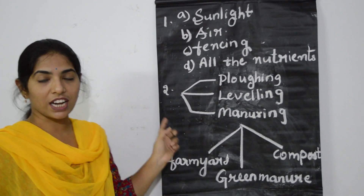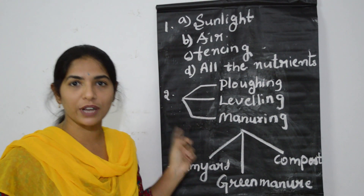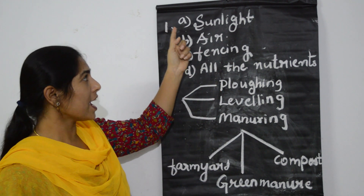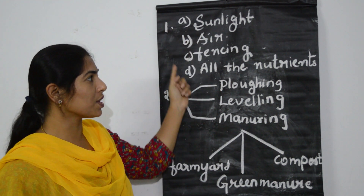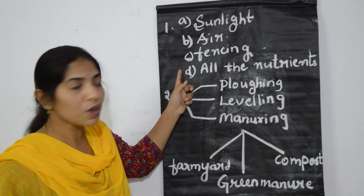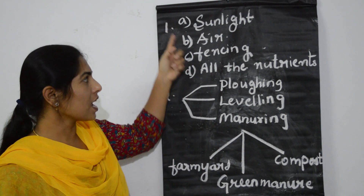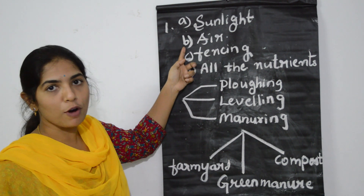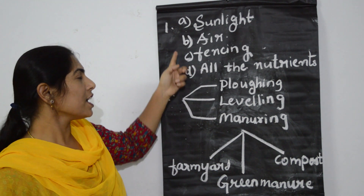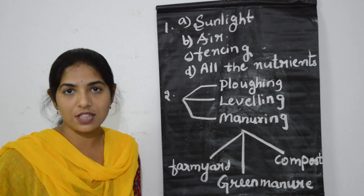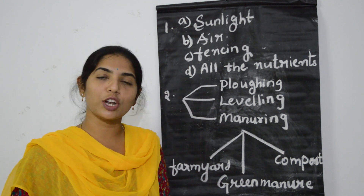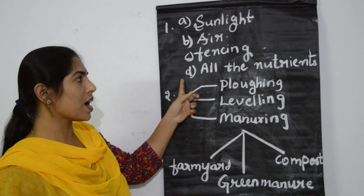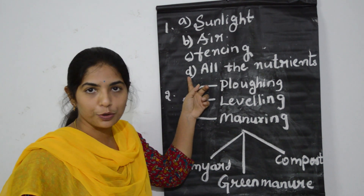In the first step — selection of the location and nature of the soil — the farmer has to ensure that sunlight and air are present for his crop field so that the plants can grow and perform photosynthesis properly. He should also ensure proper fencing so that cattle will not be able to cause harm to the crop.